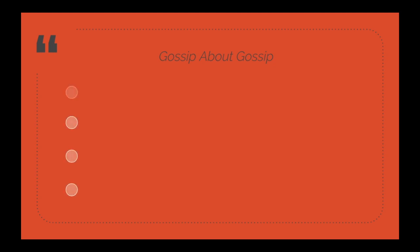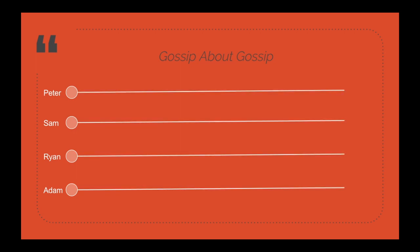Let's say we have four different people: Peter, Sam, Ryan, and Adam. Peter gossips to Sam about something, Sam gossips the same thing to Ryan, and the chain goes on. Imagine these are different nodes in a hashgraph. Every node can spread signed information or events — newly created transactions and transactions received from others — to its randomly chosen neighbors. Those neighbors collect and distribute the information to random nodes until all nodes are aware of the information. That is how gossip about gossip works.